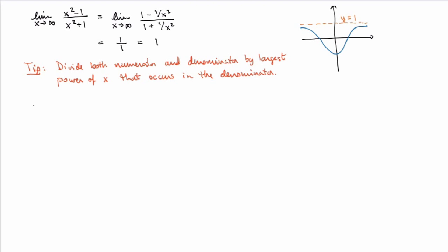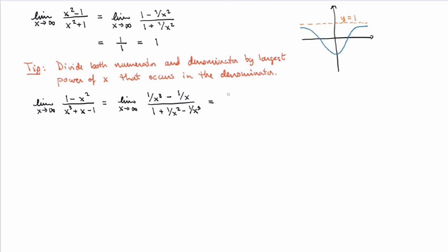Consider the limit as x goes to infinity of 1 minus x squared over x cubed plus x minus 1. The largest power of x in the denominator is x cubed, so divide both numerator and denominator by x cubed, giving 1 over x cubed minus 1 over x, all divided by 1 plus 1 over x squared minus 1 over x cubed. Taking x to be arbitrarily large: the denominator becomes 1 plus something very small minus something very small, so it's just 1. The numerator gives something very small minus something very small, which is 0. So the limit is 0 over 1, which is 0. Infinite limits can indeed equal 0.